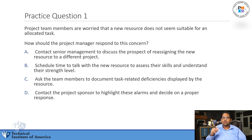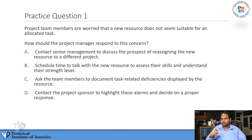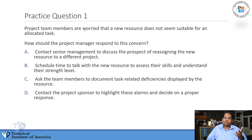Question number one: Project team members are worried that a new resource does not seem suitable for an allocated task. How should the project manager respond to this concern? So before we get into the actual choices, let's see what's going on here. The team members are worried that a new resource doesn't seem suitable for a task — that's their main concern.